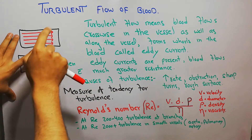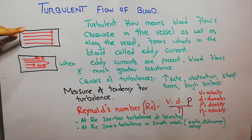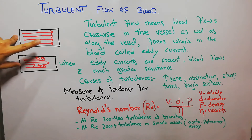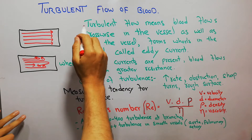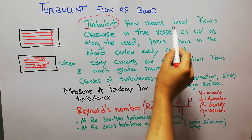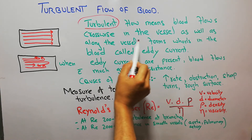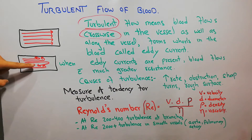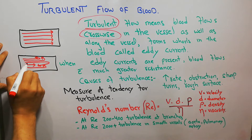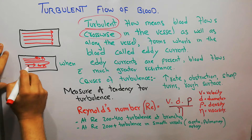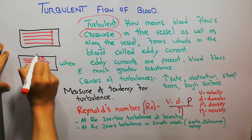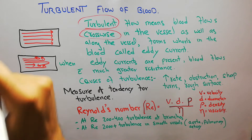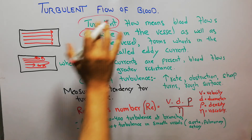Here is the laminar flow of blood — you can see the blood is flowing in a streamline along the vessel. But in turbulent flow, the blood is flowing not only along the vessel but also moving crosswise. Each and every layer of the blood is crossing every other layer.